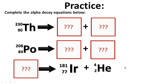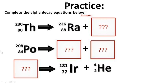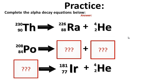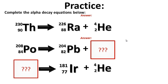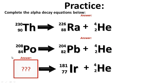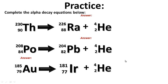Practice for your notes: complete the alpha decay equations below. Try to determine what goes in the boxes. When you're ready to see the answers, hit play. Thorium-230 decays into radium-226 and a helium nucleus or alpha particle is released. Polonium-208 decays into lead-204 and an alpha particle is released. Working backwards this time — moving away from iridium — the answer is gold-185.